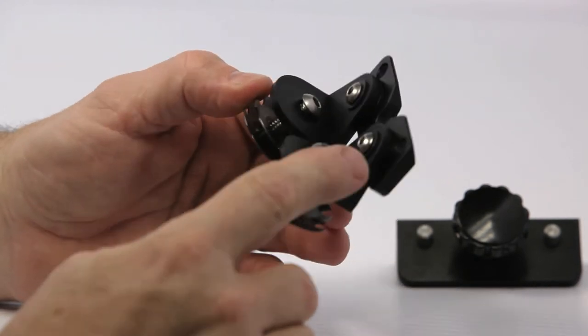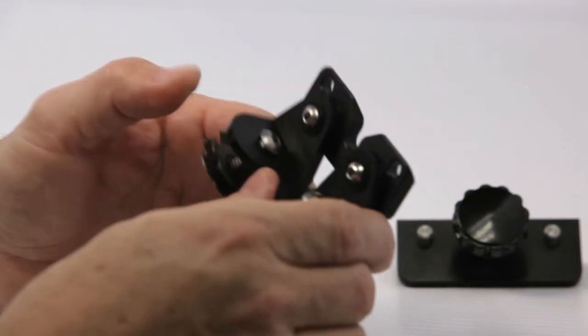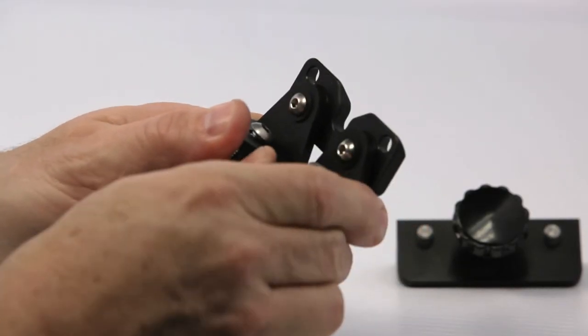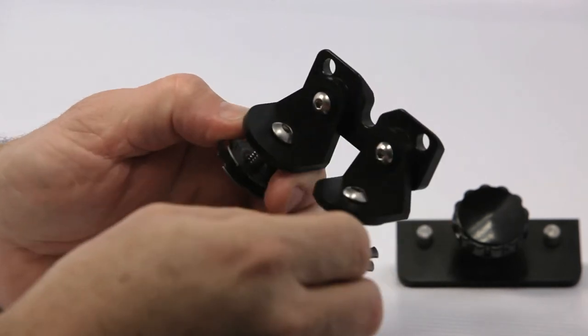And besides that we have a few Delrin washers. They're black Delrin washers at every wear point. So when these parts move they're rigid and well supported with a plastic bearing.